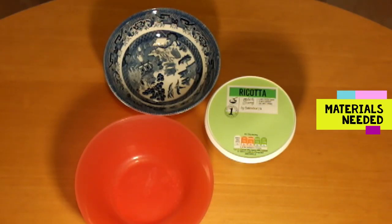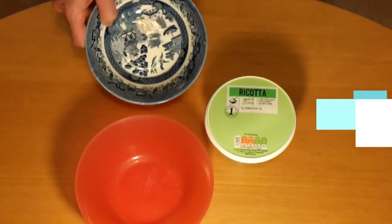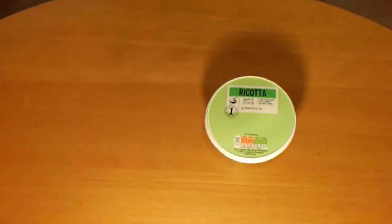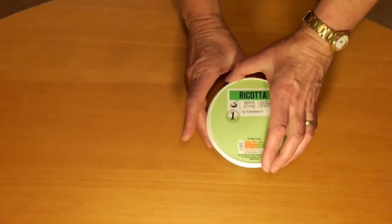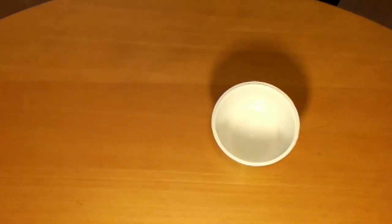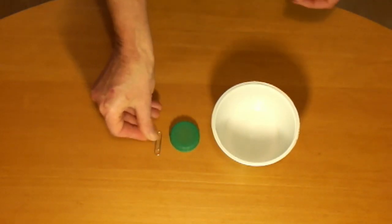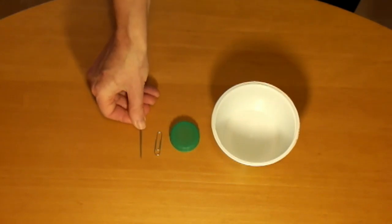This is what you'll need. A bowl or pot. I've got some examples here. This is china. This is plastic. This is a ricotta pot. You'll need a plastic milk bottle lid, a wire paper clip, and two needles.